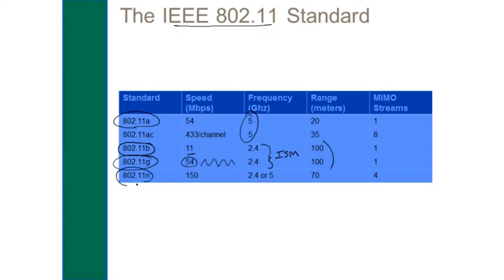When we got to 802.11n, we had good speed — 150 megabits per second — and it works at either 2.4 or 5 gigahertz frequencies with pretty good range. The key feature was multiple input and multiple output streams, so by combining those streams in data transmission, you get higher speeds.